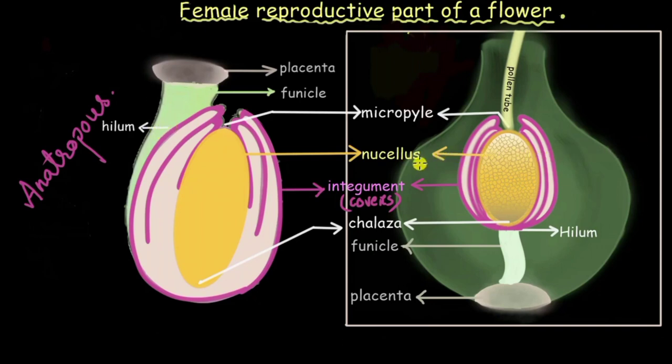And this is it. These are all the different parts of a typical ovule. These are all the different parts that you need to know. And in our future video we will talk about how the cells of the nucellus divide and form female gametes.